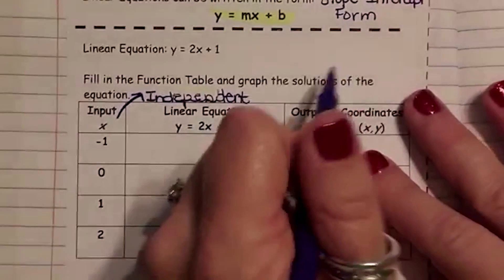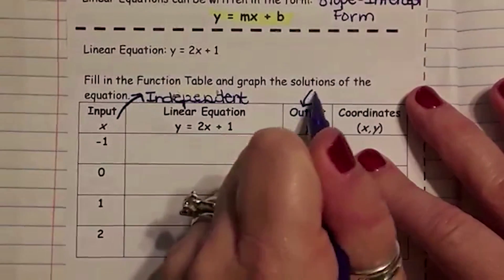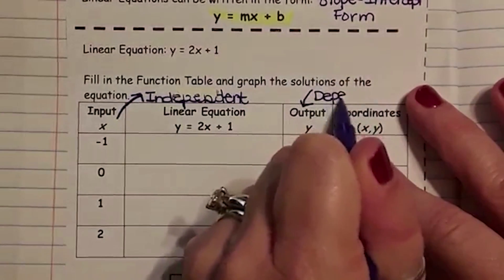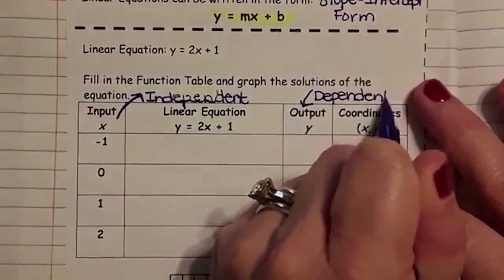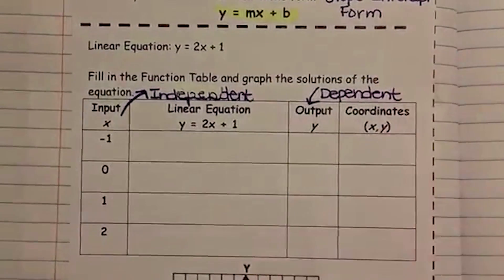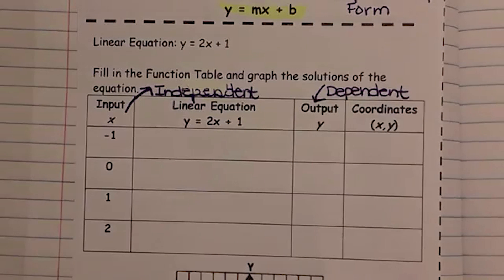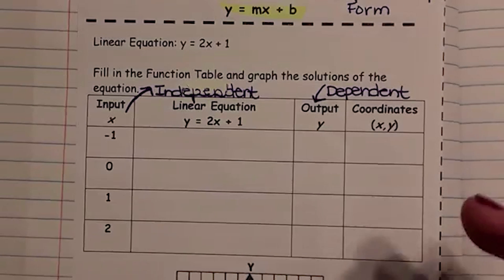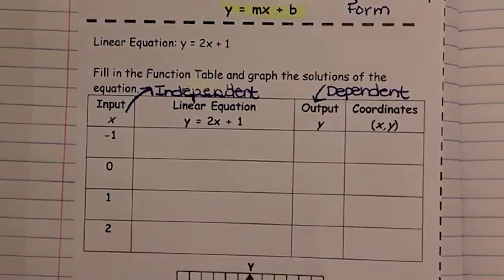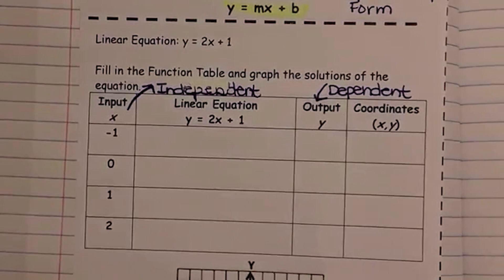The output is the dependent value. He depends on x. x does not need y, y needs x. So now what I've done is created this function table that you can go in and find your y's and your coordinates so that you can graph on the bottom.